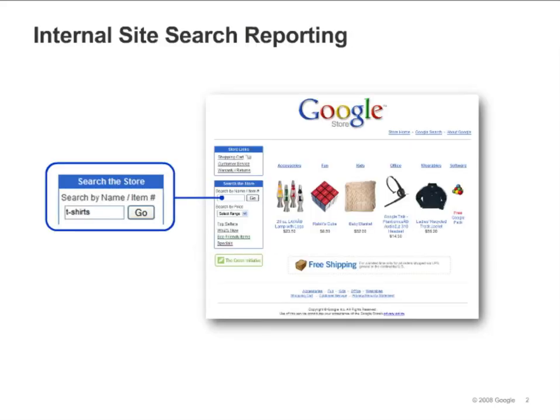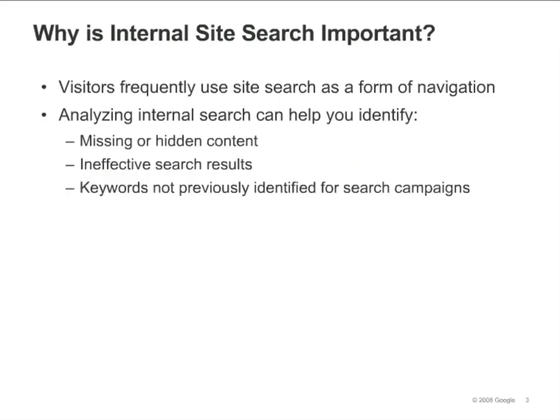Google Analytics provides internal site search reports that allow you to see how people search once they've arrived at your site. Why analyze how people search your site? On both large and small sites, visitors frequently use search boxes as a form of navigation. By looking at what people search for, you can identify missing or hidden content on your site, improve search results for key phrases, and even get ideas for new keywords to use in marketing campaigns.